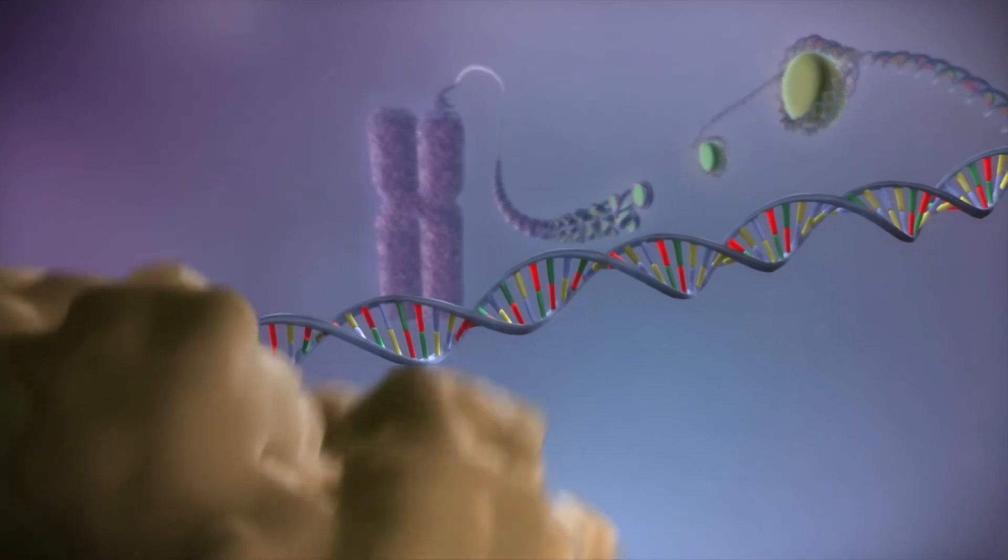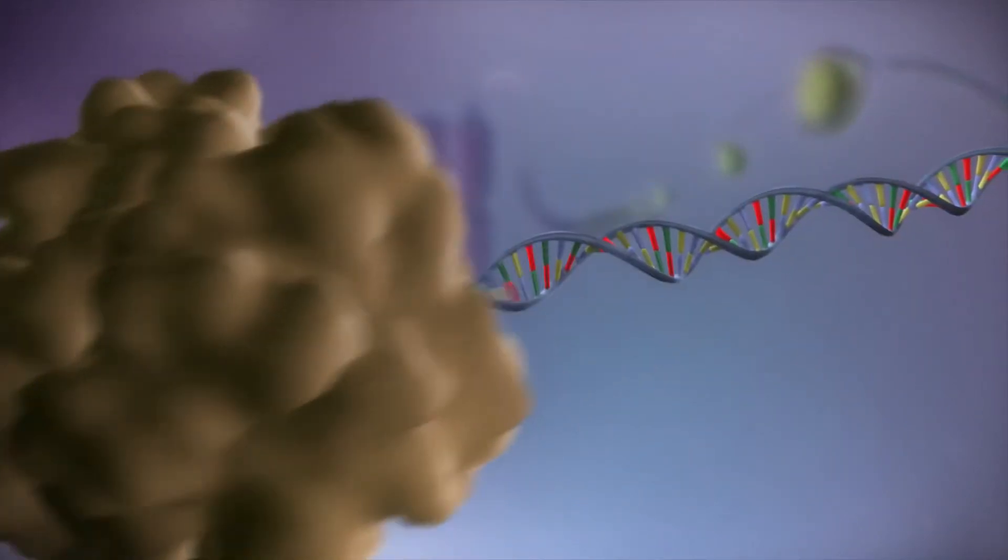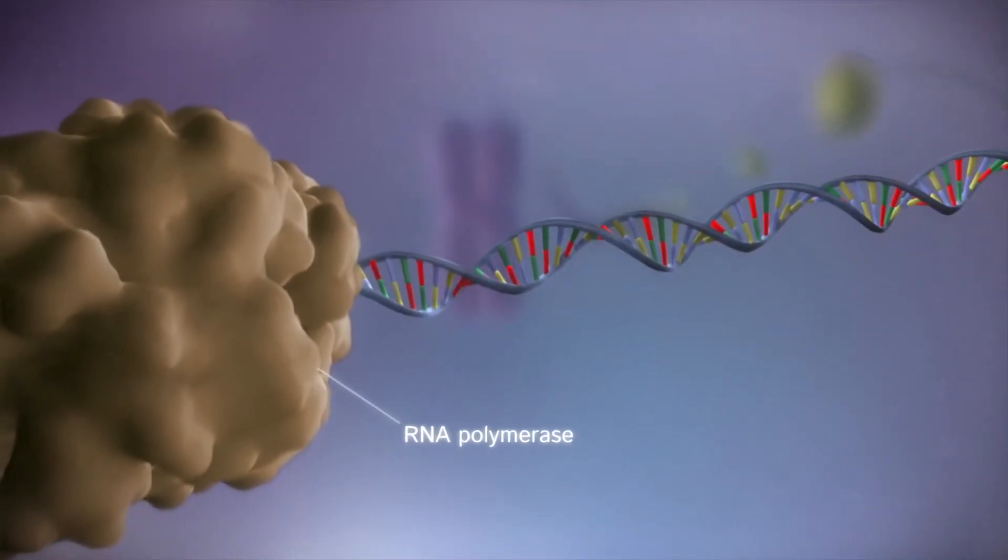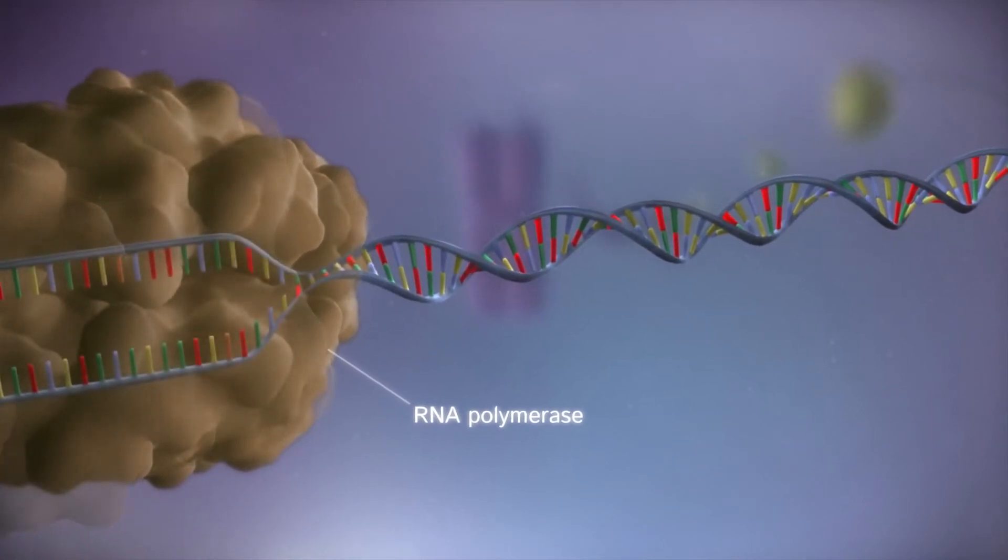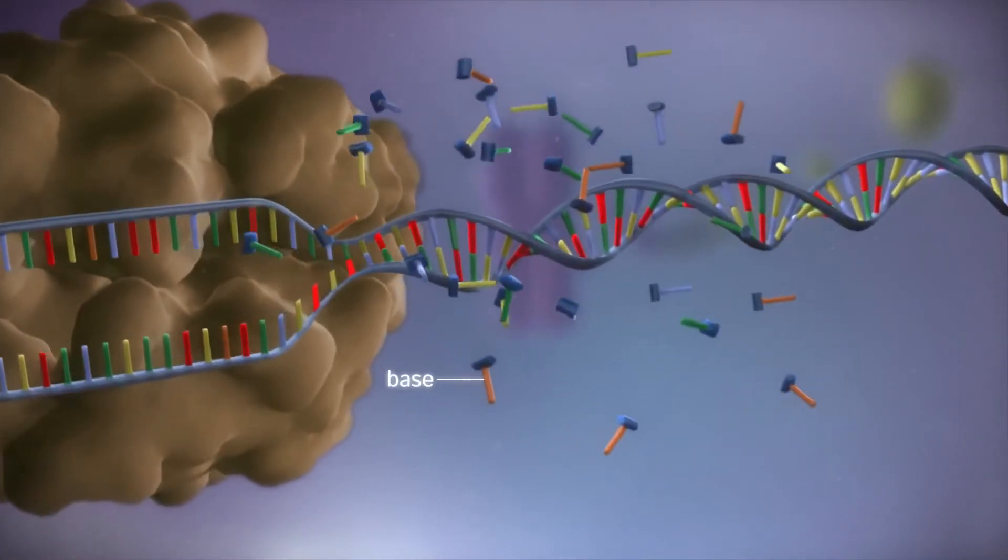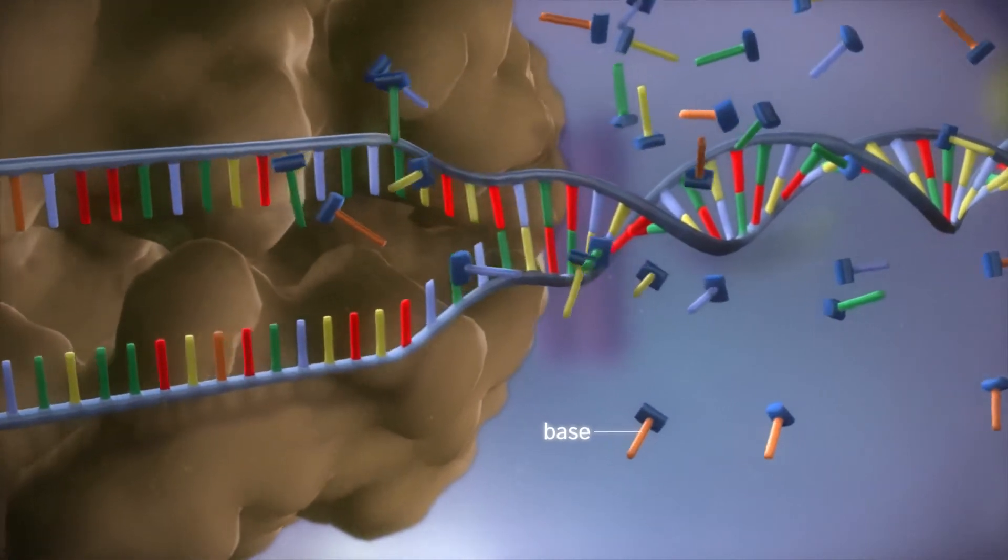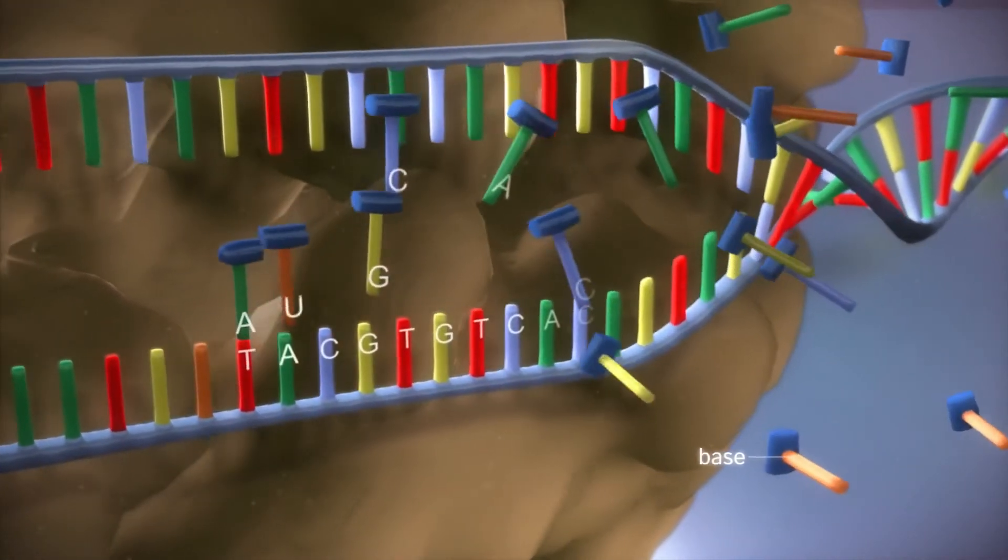When a gene is switched on, an enzyme called RNA polymerase attaches to the start of the gene. It moves along the DNA, making a strand of messenger RNA out of free bases in the nucleus.